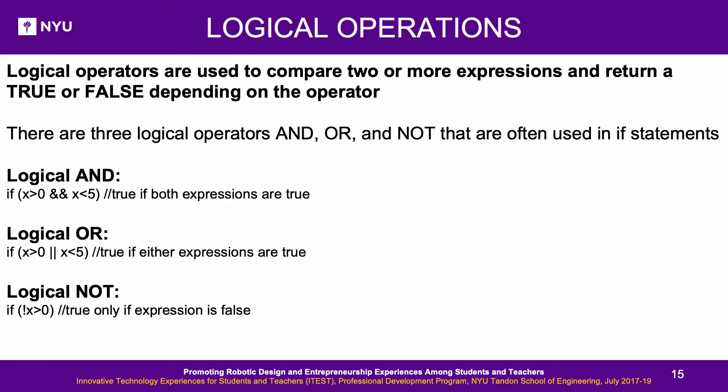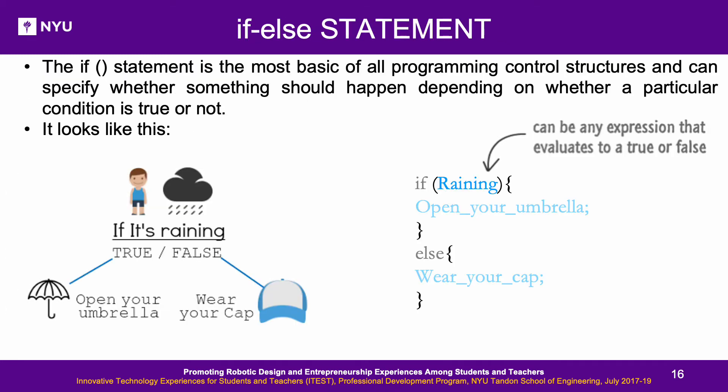Logical Operations: These operations compound two or more conditional operations. In a logical AND operation, represented by two ampersand symbols (&&), the final result is true only if both expressions are true. In a logical OR operation, represented by two vertical bar symbols (||), the result is true if either expression is true. Logical NOT is true only if the expression is false, and is represented by an exclamation symbol (!) before the expression.